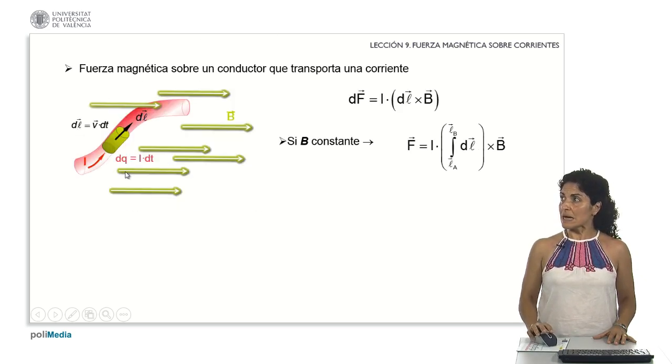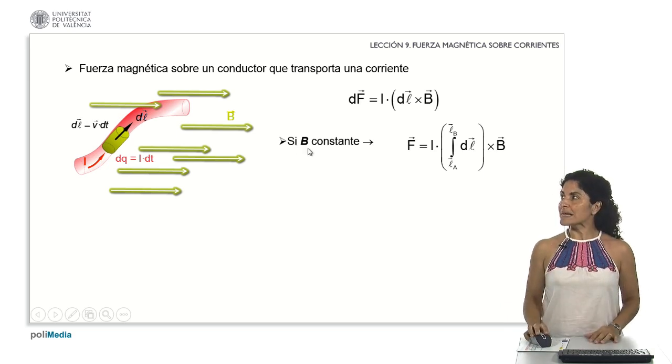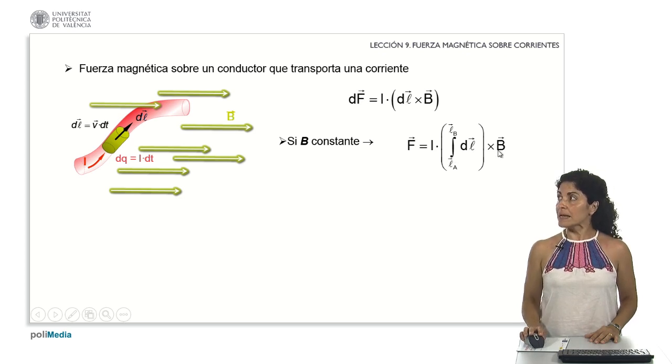Thus, based on our recent analysis, this becomes the differential expression we'll use when dealing with moving charges within a conductor. Now, when the magnetic field remains constant, what occurs? I could extract the magnetic field from my integral expression.